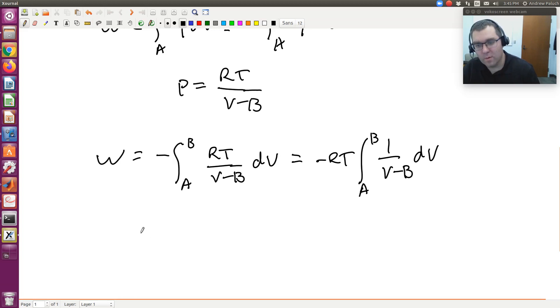R and T are constant, so this equals negative RT times the integral of 1 over V minus B dV, integrating from A to B. Then W equals negative RT times—remember the integral of 1 over x dx is log x—so this equals negative RT log of the absolute value of VB minus B divided by VA minus B.